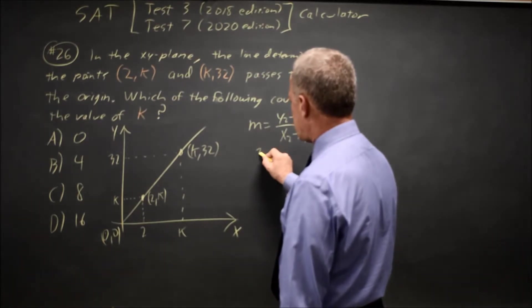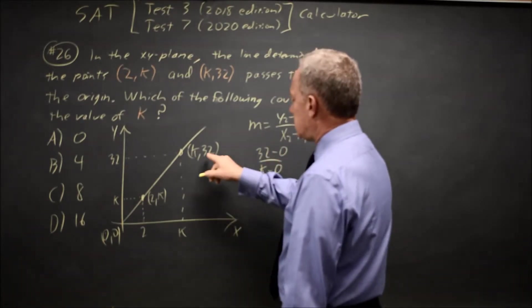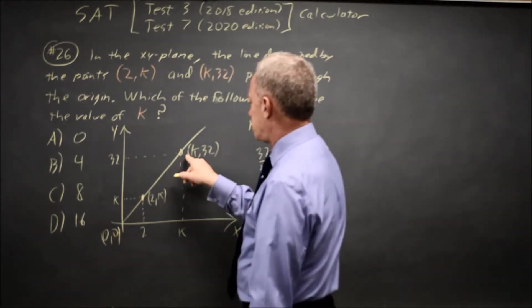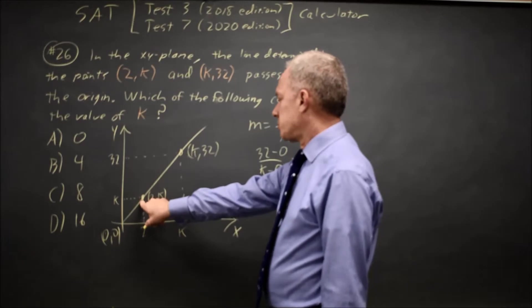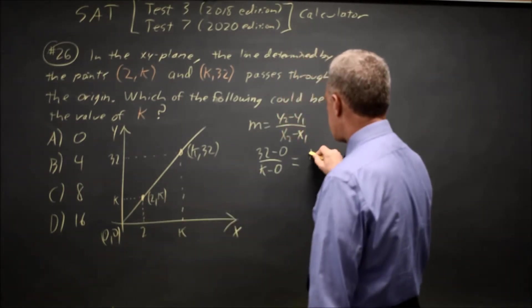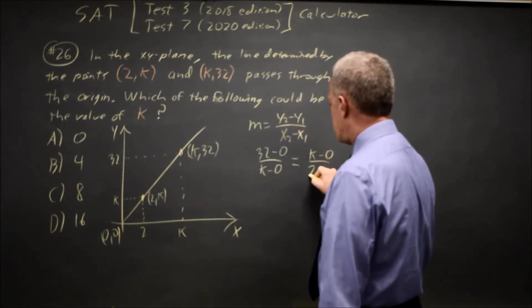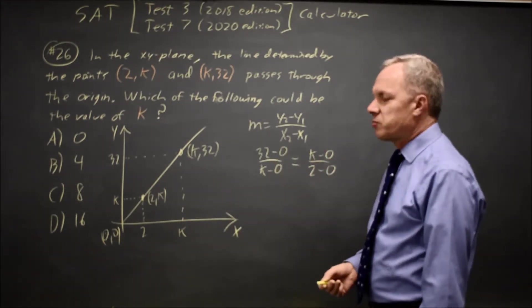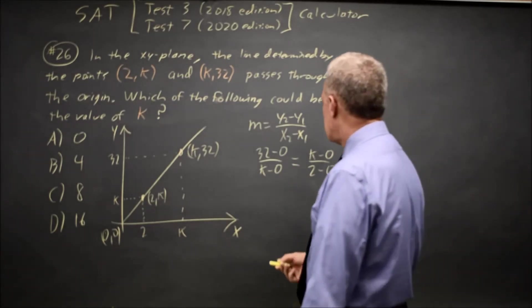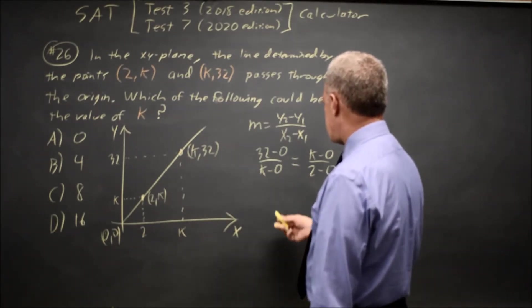So our slope is 32 minus 0 over k minus 0, which is y2 minus y1 over x2 minus x1. And it's the same slope to this other point because they're on the same line. So that's k minus 0 over 2 minus 0. Notice that the point (0, 0) is second both times, and we don't swap the order on the numerator and not on the denominator.